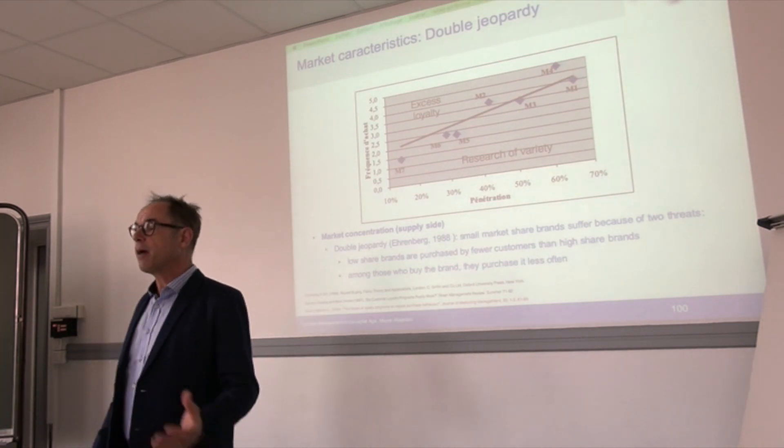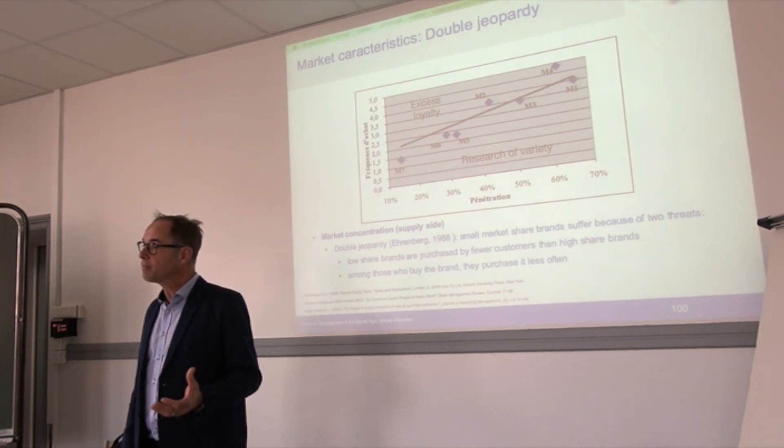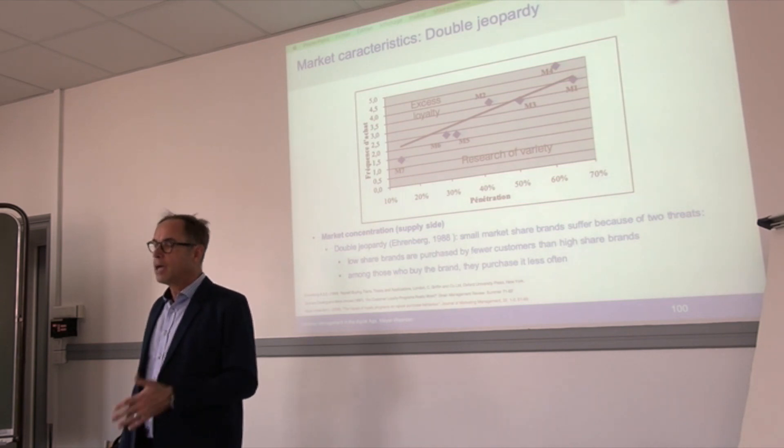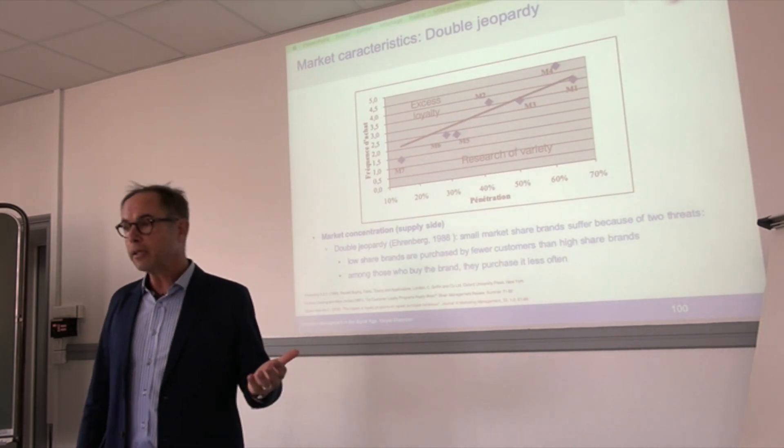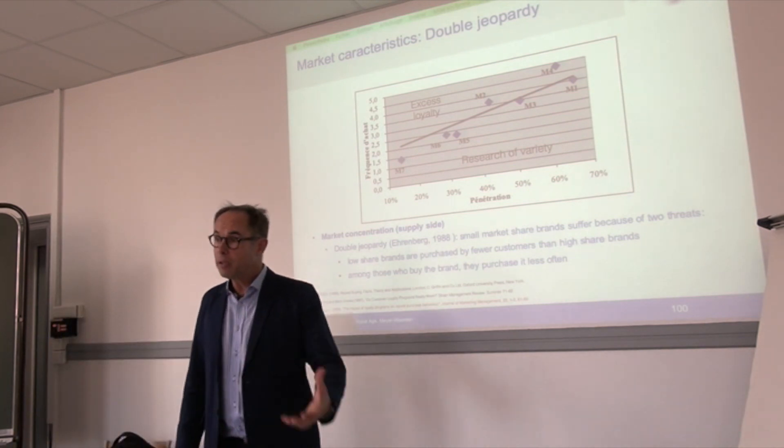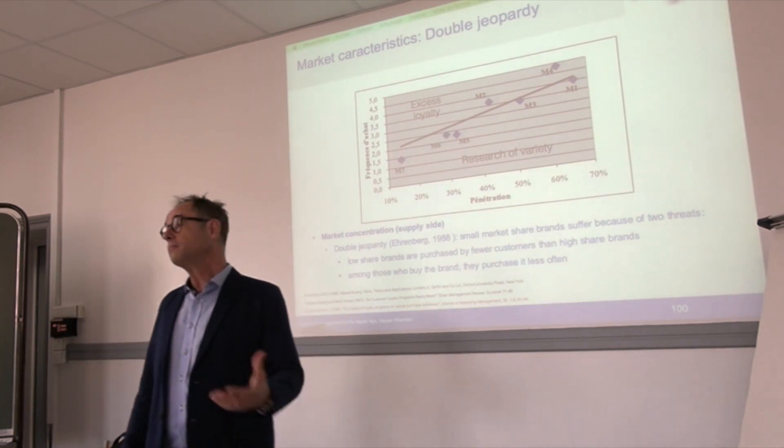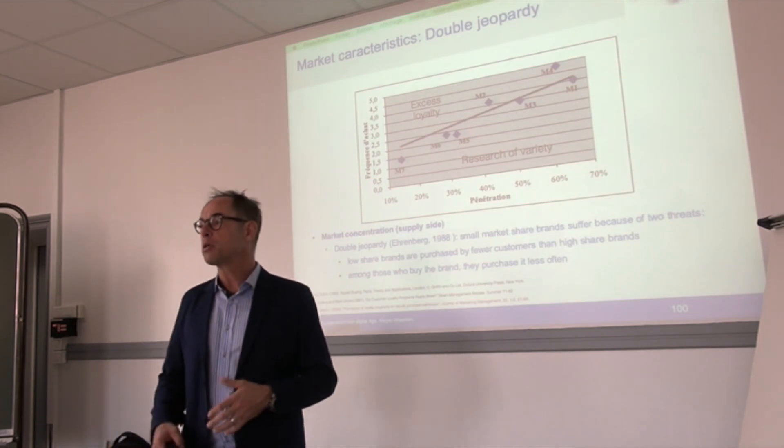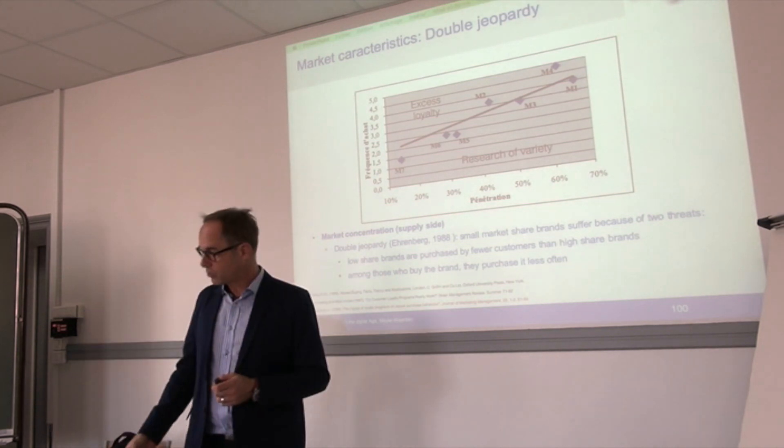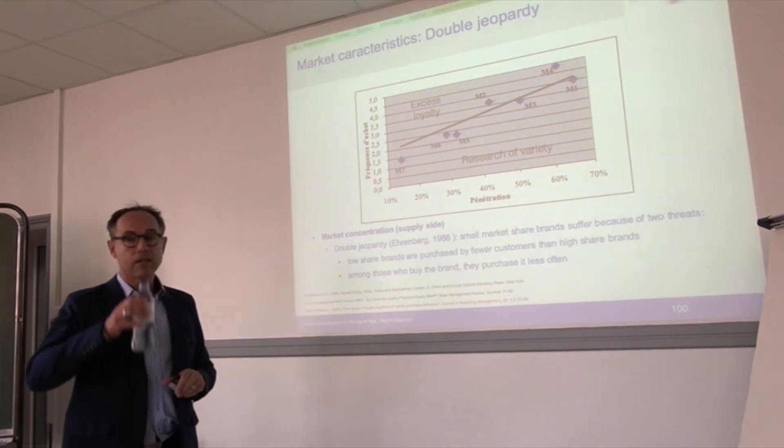In summary, double jeopardy means there are brands that are hit twice. They have a first disadvantage because they have less buyers, less penetration, and these buyers buy less often or less frequently, so they are less loyal. Actually, they're hit three times because their marketing operations are also less efficient. The only issue is to create a niche position to come out of the competitive situation.